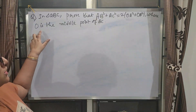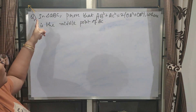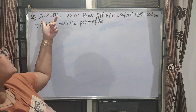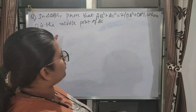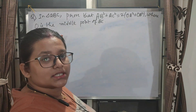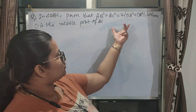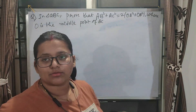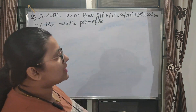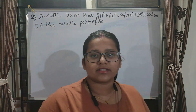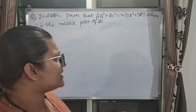Let me prove this question. In a triangle ABC, O is the midpoint of BC, and we need to prove that AB² + AC² = 2(OA² + OB²).